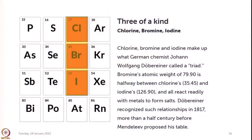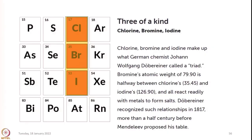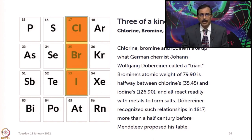Let us look into this slide here — chlorine, bromine, and iodine are shown. German chemist Johann Wolfgang Döbereiner had called chlorine, bromine, and iodine a triad. If you look at the atomic weights, bromine's atomic weight of 79.90 is halfway between chlorine's 35.45 and iodine's 126.9, and all three react readily with metals to form salts. Döbereiner recognized this relationship in 1817, almost 50 years before the modern periodic table was presented by Mendeleev.